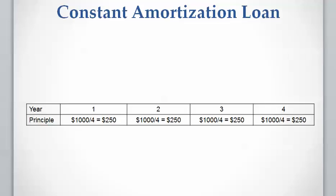The first step is to calculate the principal. The principal is calculated as the loan divided by the number of periods over which it has to be repaid. The loan was $1,000 and it has to be repaid over four years, so the principal is going to be $1,000 divided by 4 years, which gives $250 per year. The principal is constant from year one to year four at $250.